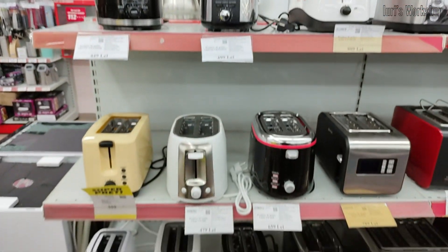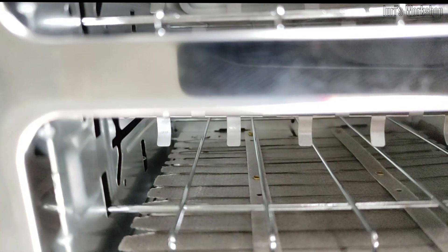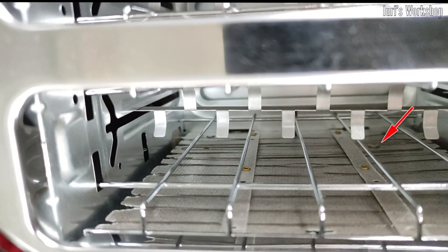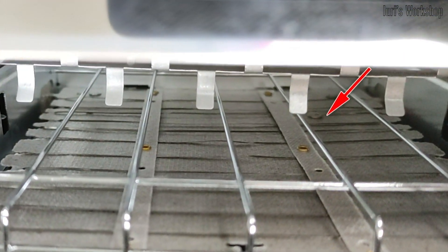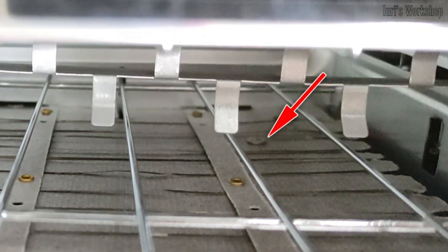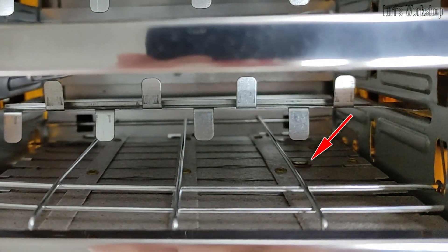And so, in order to choose a more reliable toaster that does not contain a programmed fault, it is enough to look inside the toaster right in the store and make sure that there is no such additional contact rivet located asymmetrically.